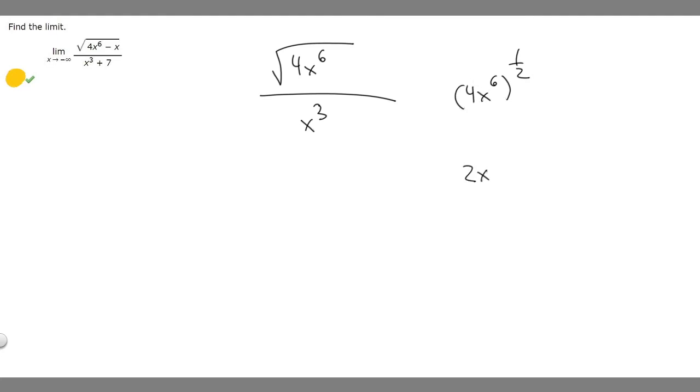And then we have x. The exponent rule tells us that we multiply our exponent on the inside times the exponent on the outside. So 1 half times 6 is going to be 3. We just rewrote the top as 2x to the 3.